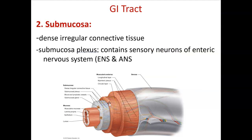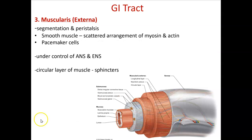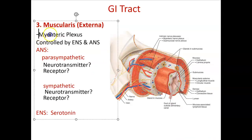The submucosa is below the mucosa and is dense irregular connective tissue with a nerve plexus containing branches of the ENS and ANS. The main player is in the muscularis — smooth muscle where all segmentation and peristalsis occur. Smooth muscle still has myosin, actin, and sarcomeres, and has pacemaker cells just like the heart, cells that depolarize on their own, and gap junctions. Circular layers form sphincters that can open or close, usually found at junctions between organs. The nerve plexus here is called the myenteric plexus.